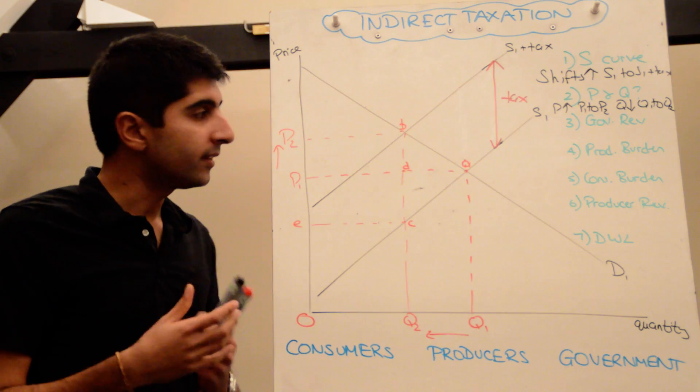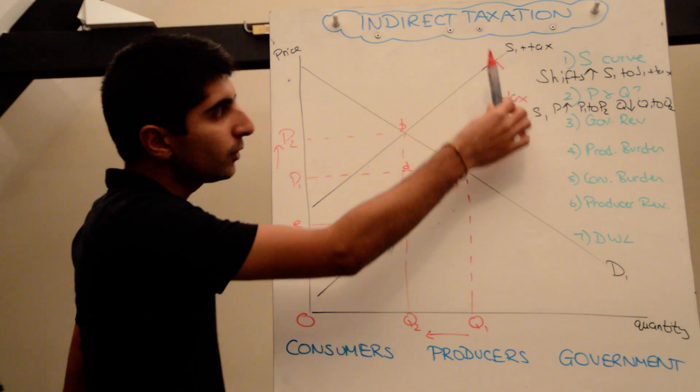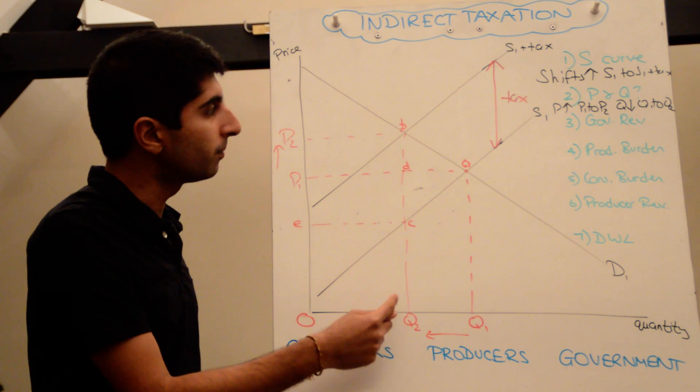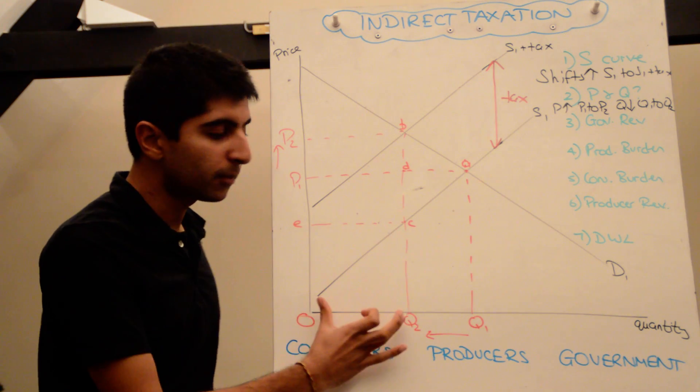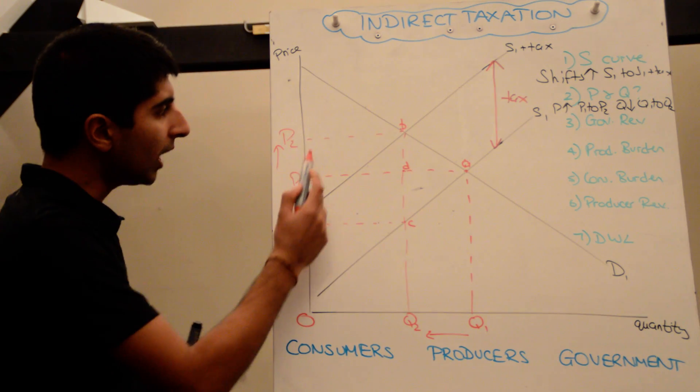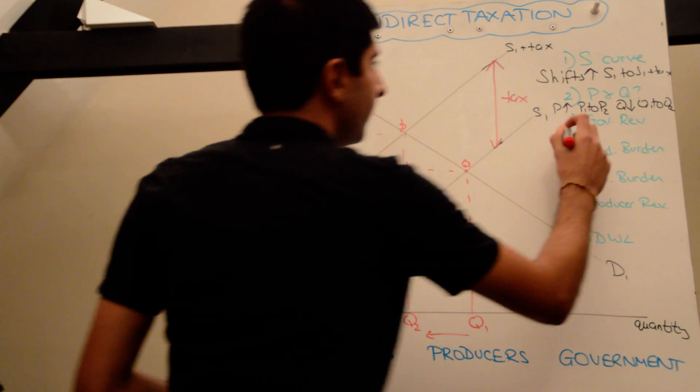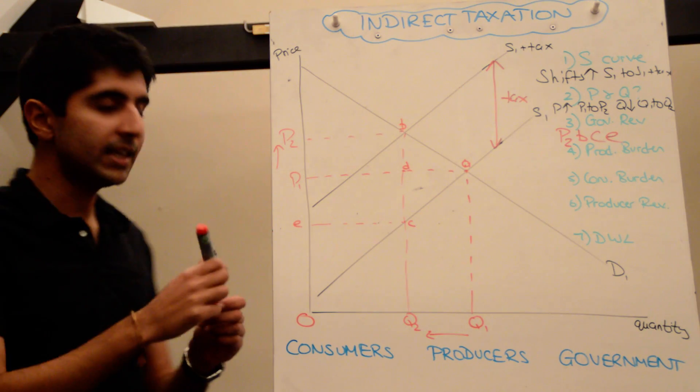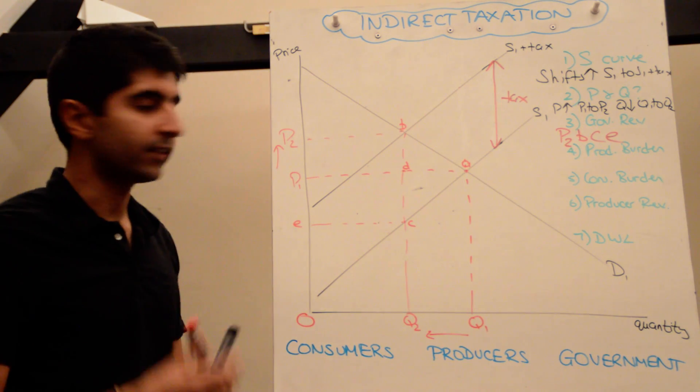We can also work out that the government is gaining revenue here. The vertical distance between the curves is the value of the tax. So if we go to our new equilibrium at P2, Q2, the vertical distance from that equilibrium down to the old supply curve, BC, is the value of the tax times by the number of units sold as a result of the tax, which is now Q2, gives us an area. The area is the rectangle P2BCE. That represents the area of government revenue.